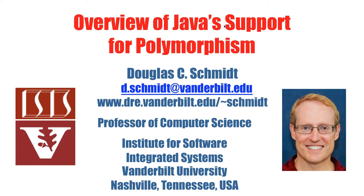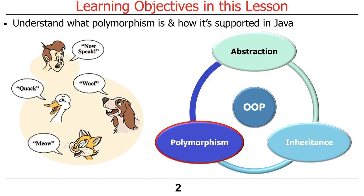Now that we've covered inheritance, let's go ahead and talk about its sibling. They're really sort of joined at the hip like Siamese twins or Janus, the two-faced god — they always go together. We're going to talk about what polymorphism is and how Java supports it.